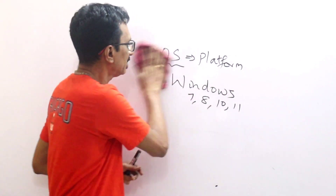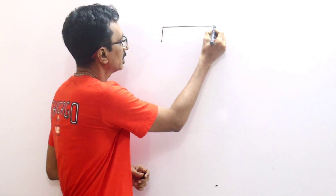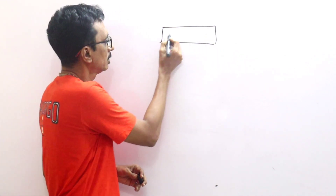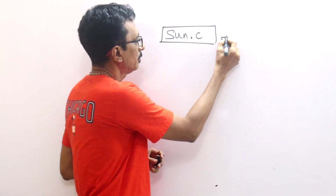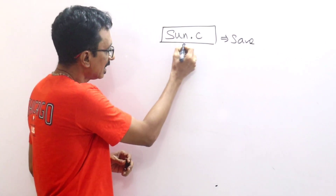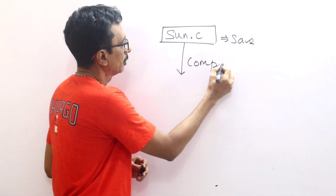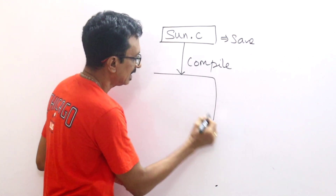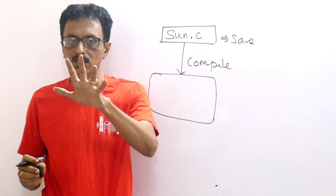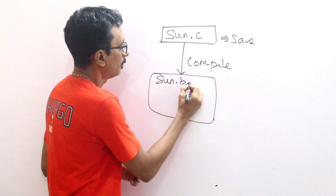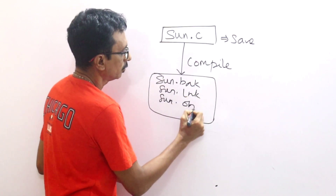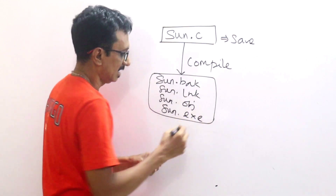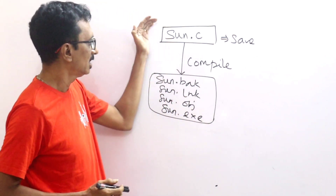Specifically, if you look at platform independent — multiple classes in the program occur here. In C, if you save a file named Sun.c and compile it, you create four files: Sun.bak, Sun.link, Sun.obj, Sun.exe. You can create a C program, save it, and compile it.